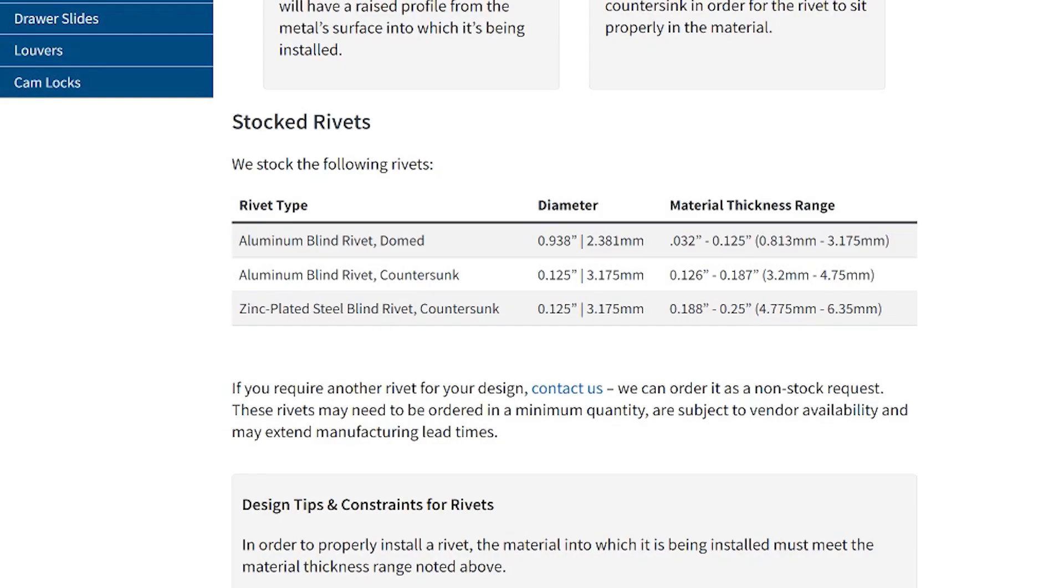You can opt for secondary finishes such as anodizing or chemical film conversion coating on a design that includes rivets so long as the rivets material is compatible with the finishing process you choose. Our website notes the material type of each rivet we stock. And if you need another rivet for your design just contact us. We can order it for you at a non-stock request.